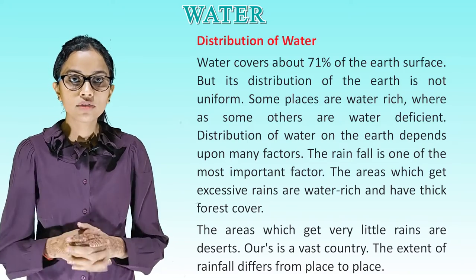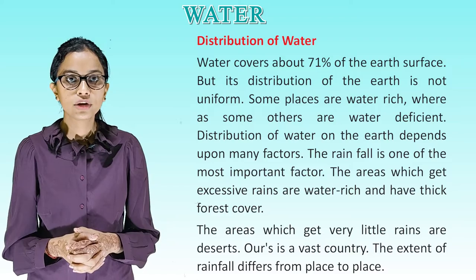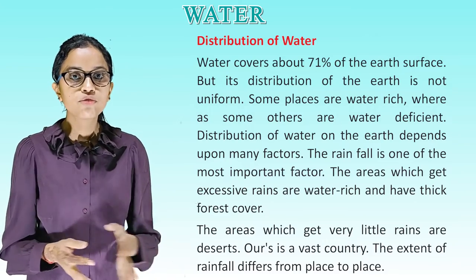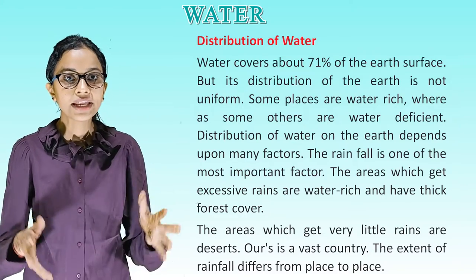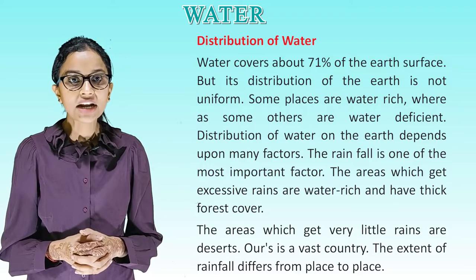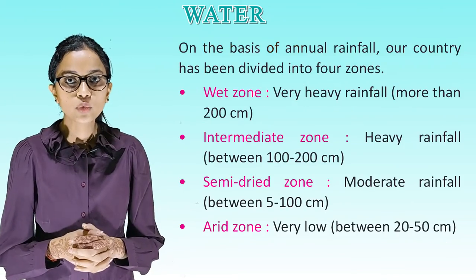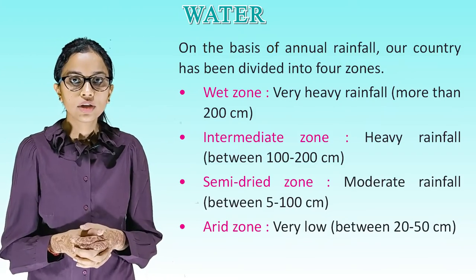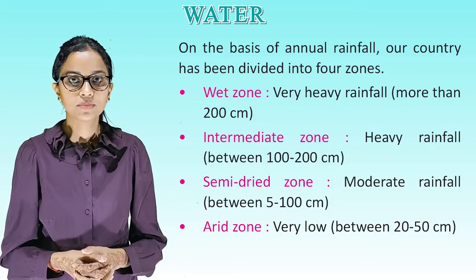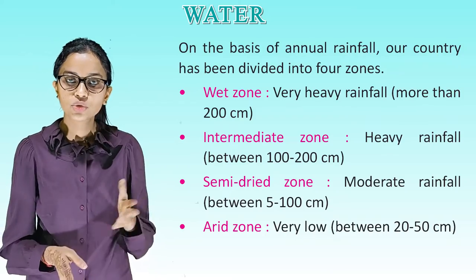Distribution of water. Water covers about 71% of the earth's surface, but its distribution is not uniform — some places are water rich, whereas others are water deficient. Distribution of water on the earth depends upon many factors; rainfall is one of the most important. Areas which get excessive rain are water rich and have thick forest cover; areas which get very little rain are deserts. Our country has been divided into four zones based on annual rainfall: wet zone (very heavy rainfall, more than 200 cm), intermediate zone (heavy rainfall between 100 to 200 cm), semi-arid zone (moderate rainfall between 50 to 100 cm), and arid zone (very low rainfall between 20 to 50 cm).